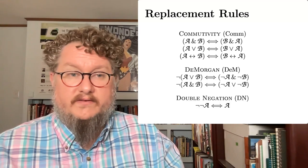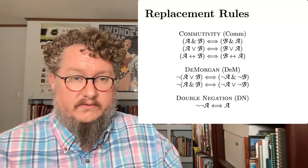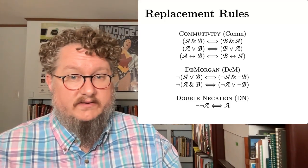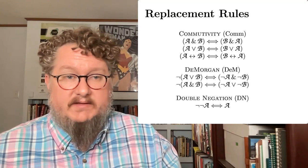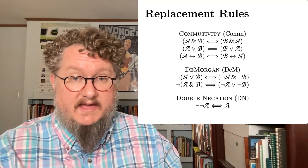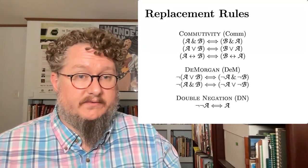Double negation, also a very helpful replacement rule. Whenever you've got two negations, you can eliminate the double negation. So not not A is the same as A. Also, occasionally you might want to start from A and substitute in not not A, and that's allowed as well.